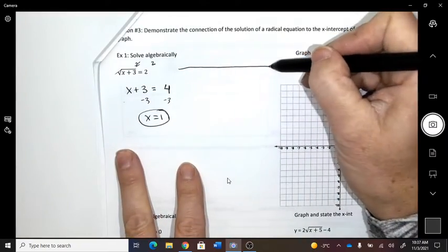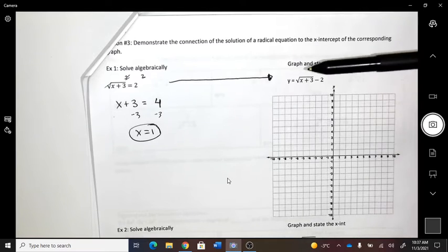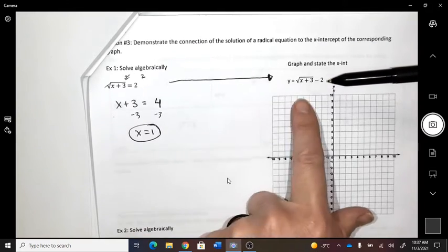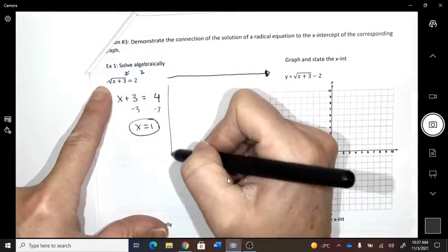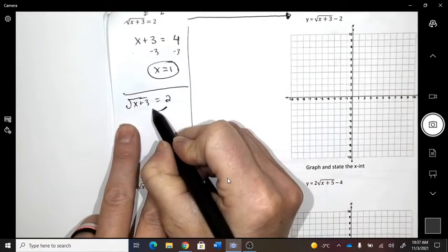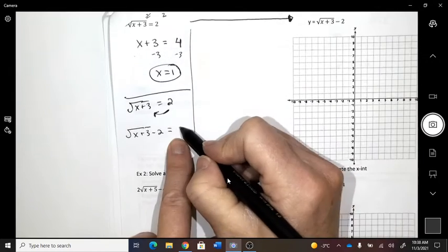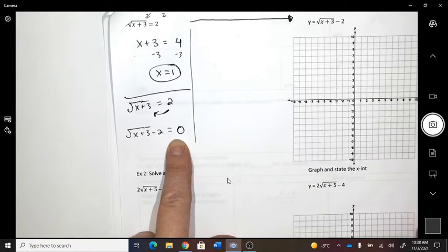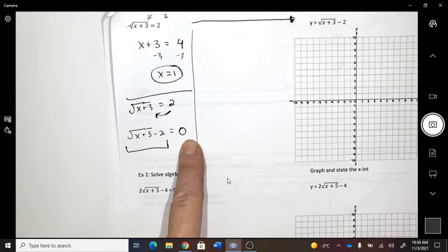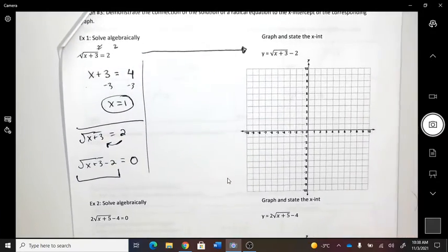Now, do you see what I did here? What did I do? I moved the 2 over to that side, right? So, this graph, I'm going to graph it. And what I should get is, because I moved that to that side. Can you think about your algebra? If you move this to that side, what is that going to equal? If I moved that algebraically, if I moved it, what will it be? 0. So, now I'm going to graph this equation and I'm going to look for where is it equal to 0. And you know what it should do? It should match that number.